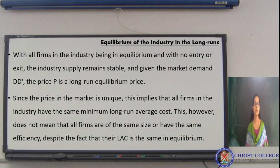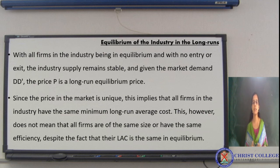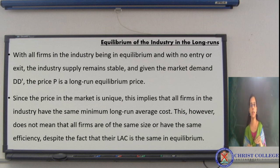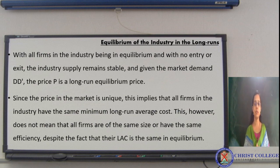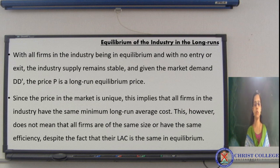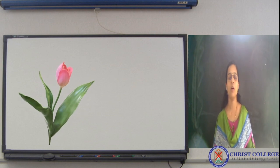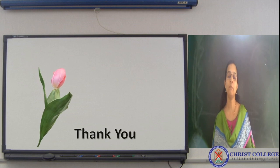With all firms in the industry being in equilibrium and with no entry or exit of firms, industry supply remains stable. Since the price is unique, it means all firms have the same minimum long-run average cost. This is all about the long-run equilibrium of an industry in a perfectly competitive market.